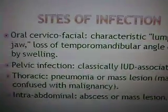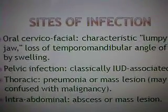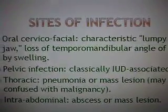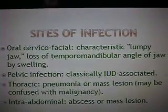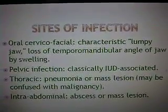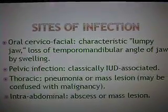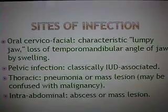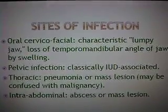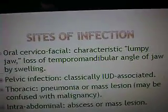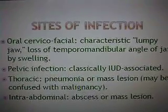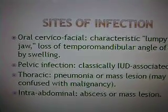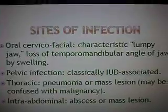Usually patients who experience severe actinomycosis on the jaw region lose the temporomandibular angle of the jaw, and this is usually caused by extreme swelling. Actinomycosis can also be found in the pelvic region, and this is usually introduced to women who receive an IUD vaginally. When it crosses into the bloodstream, it becomes a problem.